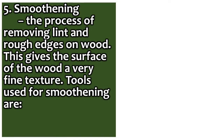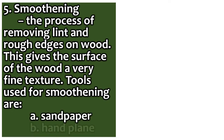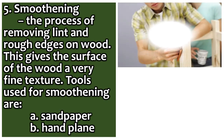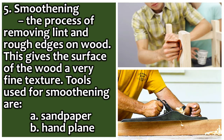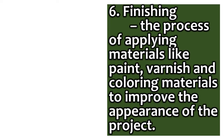Method 5 — Smoothening: the process of removing lint and rough edges on wood, giving the surface a very fine texture. Tools used for smoothening are sandpaper and a hand plane. Finishing is the process of applying materials like paint, varnish, and coloring materials to improve the appearance of the project.